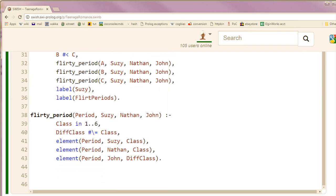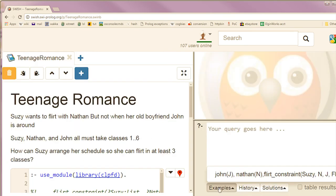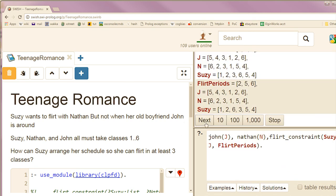I have John's and Nathan's schedules, and now we can save Susie. Susie has lots of options. Oh Sam, you saved Susie. Oh gosh, I know. It was easy. I had Prolog power.